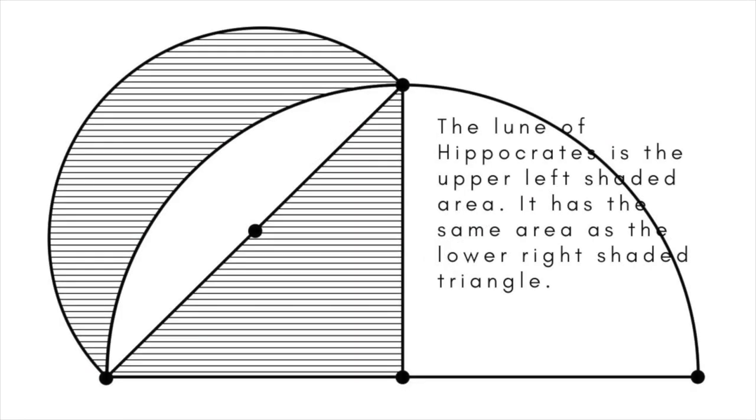The second geometry problem that stumped the Greeks was squaring the circle. Given a circle, is it possible, again using just a straight edge and compass, to construct a square with the same area as the circle?